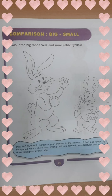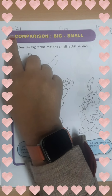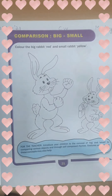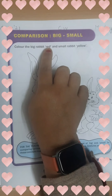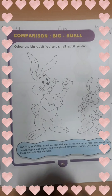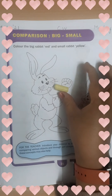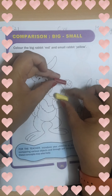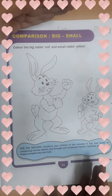Now this is our page number 21. Mama will put the date and classwork. The date is 15 November, C.W. means classwork, and the day is Monday. The topic is: Comparison — Big and Small. You can see two rabbits. Color the big rabbit red and the small rabbit yellow.